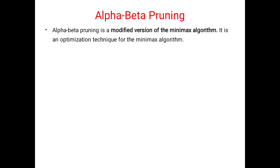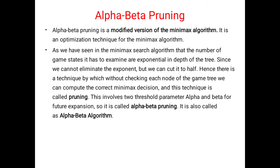In the previous sessions we have covered the minimax searching algorithm and alpha beta pruning examples. In today's session we will discuss some additional information regarding alpha beta pruning. Alpha beta pruning is an advanced concept and a modified version of the minimax algorithm. It rectifies the disadvantages of the minimax searching algorithm.